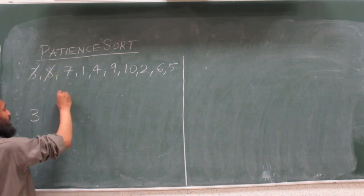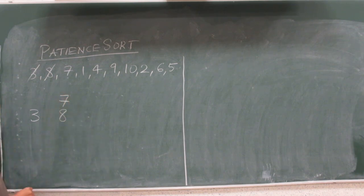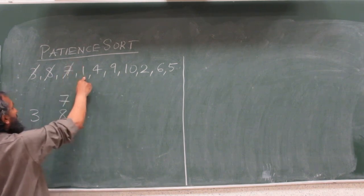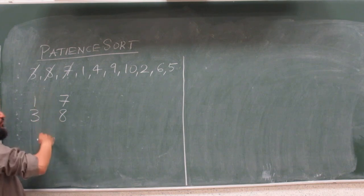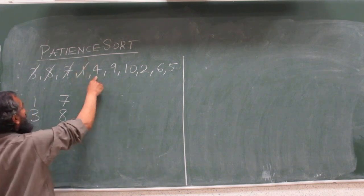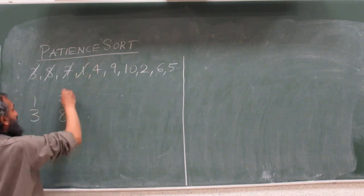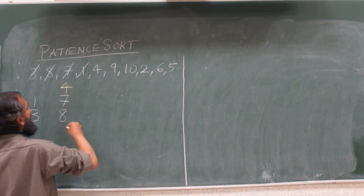Seven can go on top of eight. Whenever something can go on top of something, try to do that. One can go on top of both three and seven. Let's say we scan from this side. The first time we find something where we can put it on top, we put it on top of it. Four cannot go on top of this but can go on top of this.